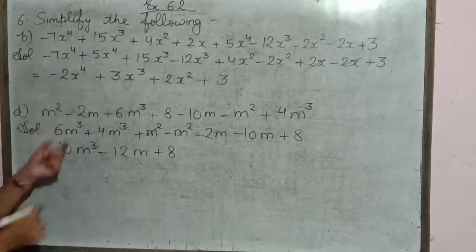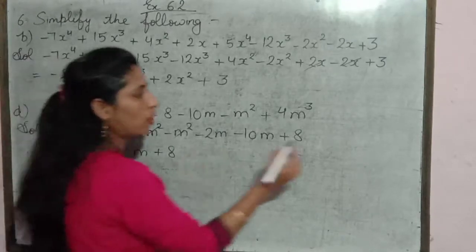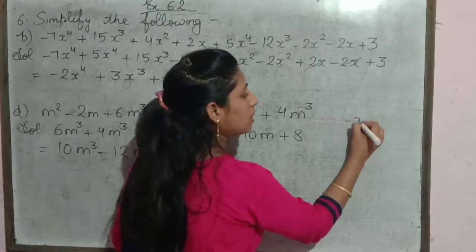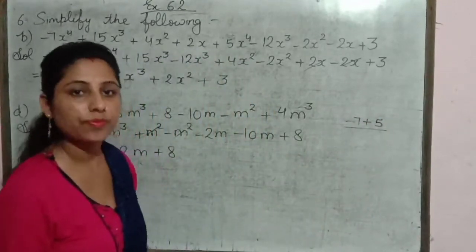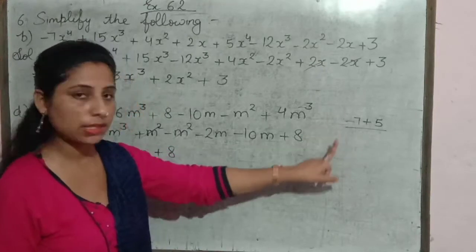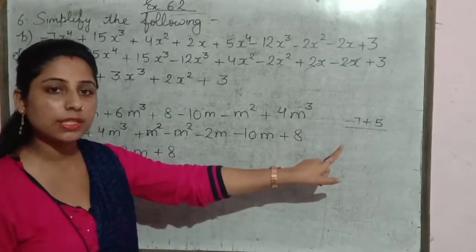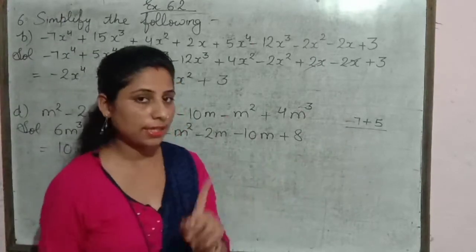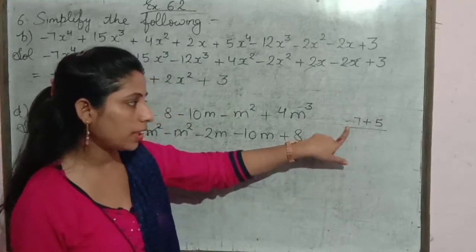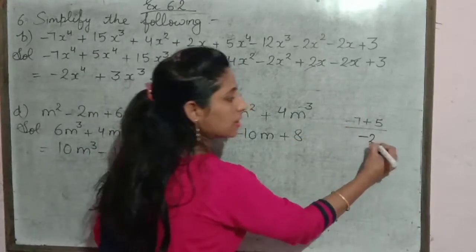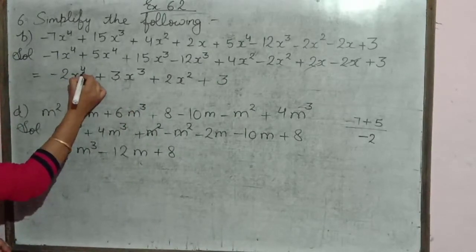Yahan par in do terms ko hum ek saath solve karenge: minus 7 and plus 5. Aapne signs dekhne hain — minus 7 ho and plus 5 ho, toh plus minus gives minus. Greater number se smaller ko minus karna hai. Answer will be 2, and sign iska aata hai jiska greater hai. Yeh negative greater hai, toh answer will be minus 2x raised to power 4.